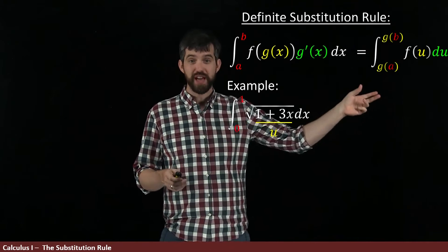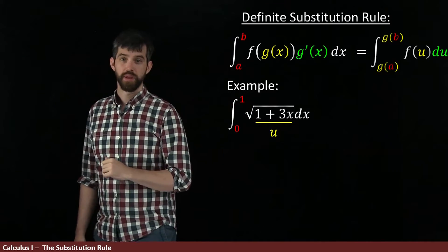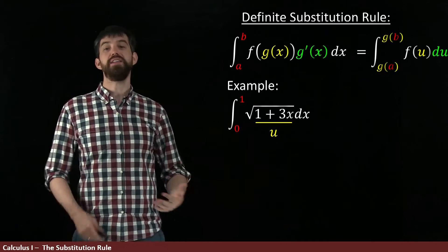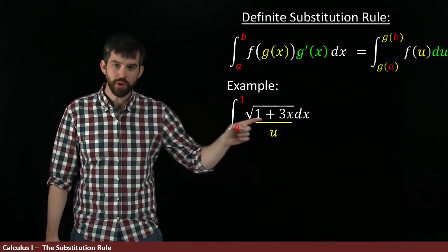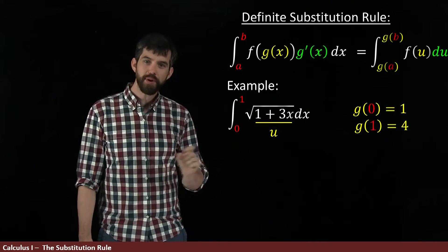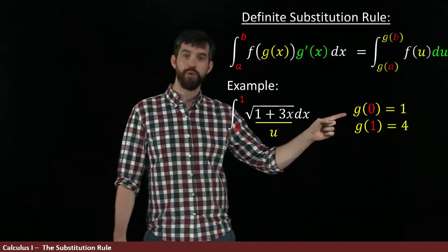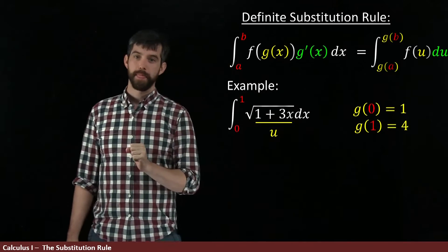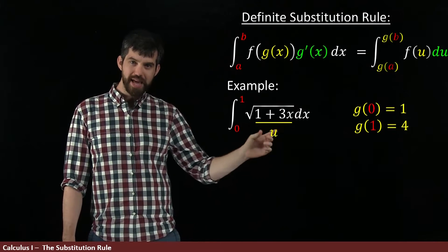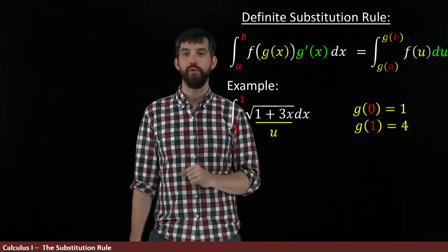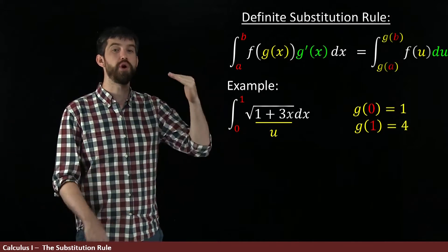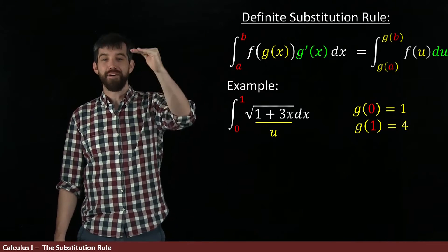Now that I've identified the u, I want to go to, how about the g of a and the g of b? Well, u equals g of x is equal to 1 plus 3x. So if I plug in 0 here, then what I'm going to get is just 1 plus 0. So g of 0 is 1. And if I plug in the 1 for my x, I get 1 plus 3, which is equal to 4. So that's what my bounds are going to be. They're going between now 1 and 4.